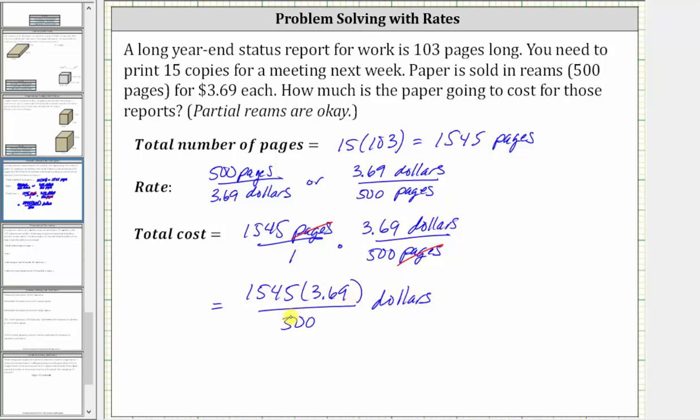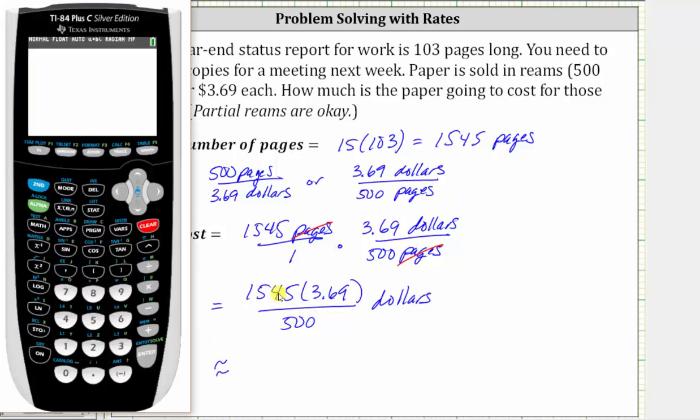Let's calculate this expression on the calculator and round to the nearest cent. We need parentheses around the numerator, so we have open parenthesis, 1,545 times 3.69, close parenthesis, divided by 500. Enter. Rounding to the nearest cent or two decimal places, because we have a two in the third decimal place, we round down. The cost is approximately $11.40.